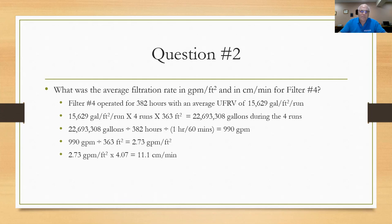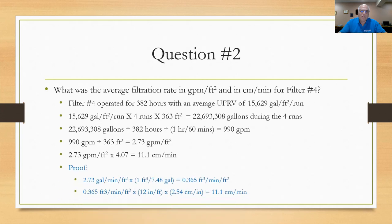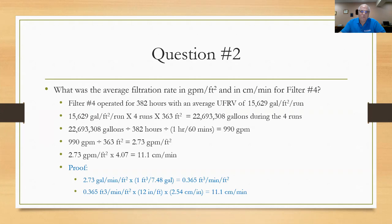To prove where the 4.07 comes from: take 2.73 gallons per minute per square foot, convert gallons to cubic feet by dividing by 7.48, giving cubic feet per minute per square foot. The square feet cancel, leaving feet per minute — a velocity. Then multiply by 12 inches per foot and 2.54 centimeters per inch to get 11.1 centimeters per minute — the same result. This effort gets operators thinking in terms of filter velocities rather than filter loading rates.